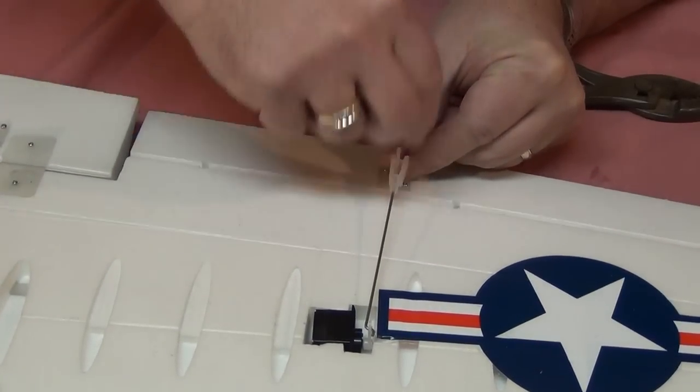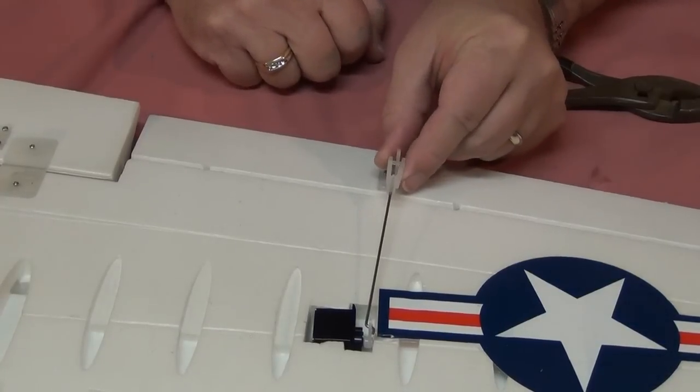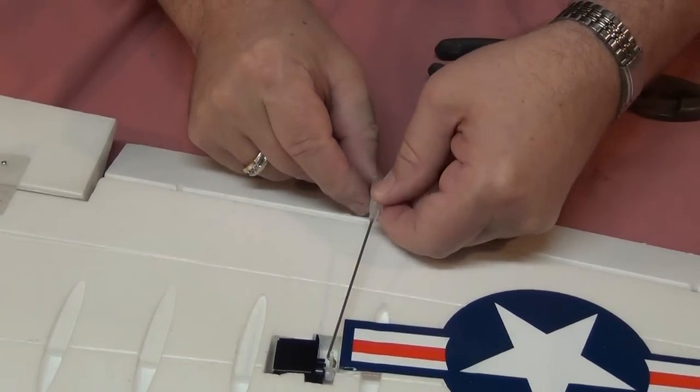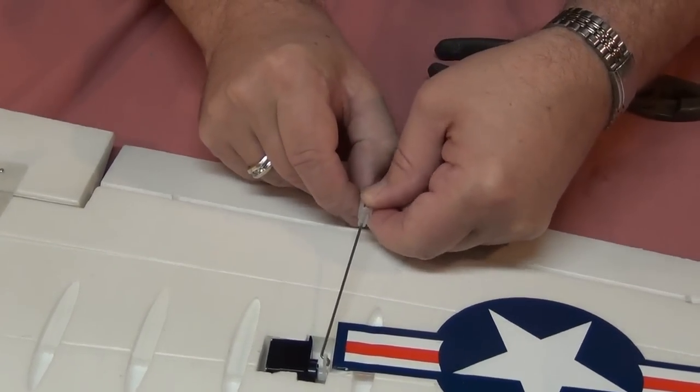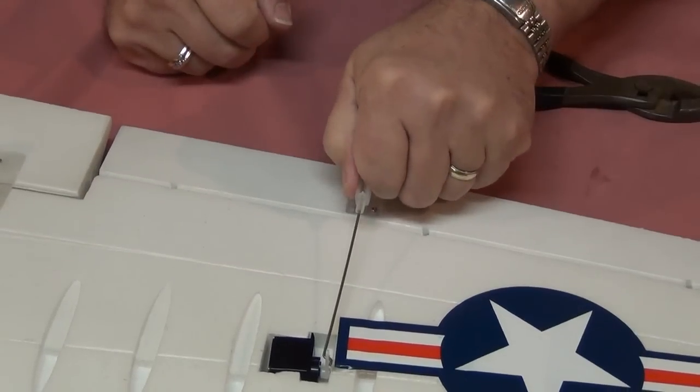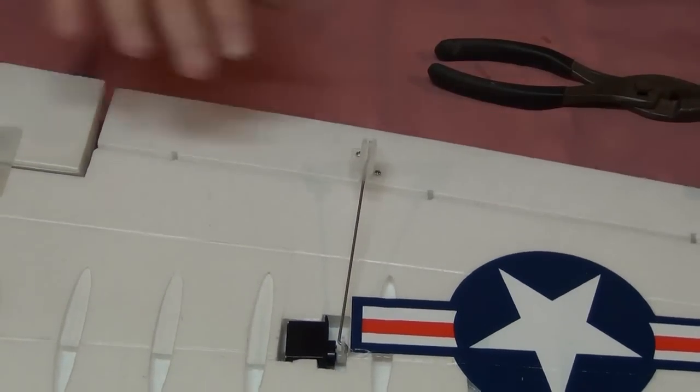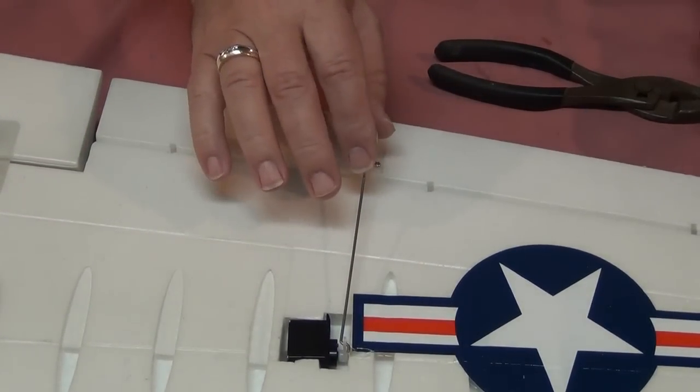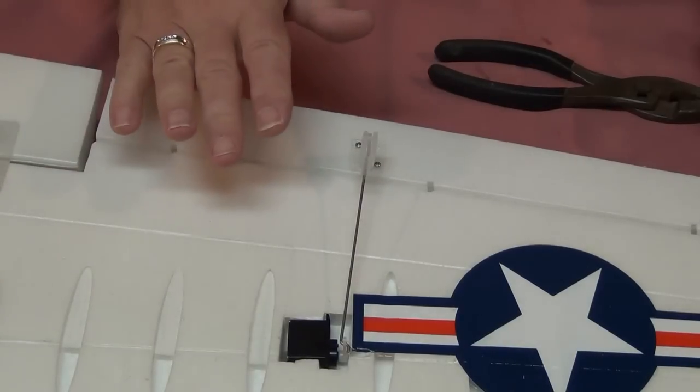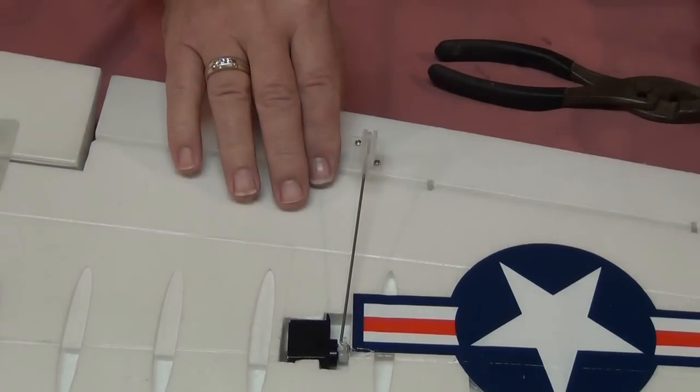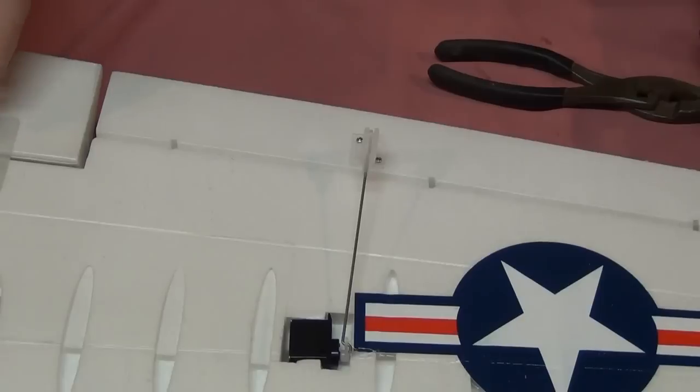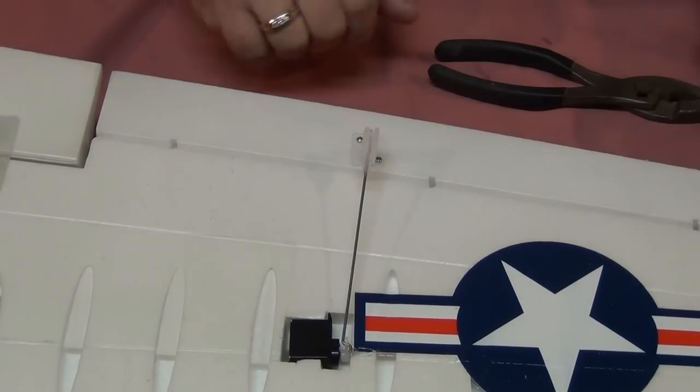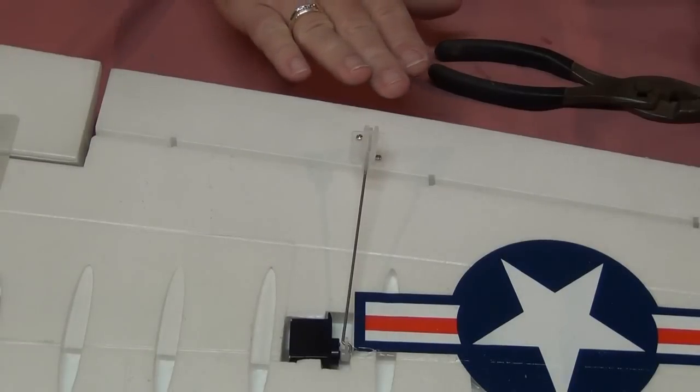Now I'm not going to put my little zip ties on here quite yet. I'll do that after I finish up with the control throw measurements when we get the radio programmed and everything together. And then I'll cinch those down with the cable ties in case I need to change which of the holes that I have the clevis mounted in to get the desired control throws. Next step is going to be up with the landing gear.